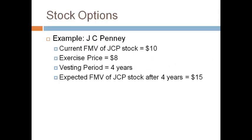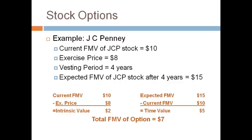This example for JCPenney illustrates how intrinsic value and time value is determined. The intrinsic value is determined by the difference in the current fair market value and the exercise price. The time value is the expected increase in the price of the stock over the vesting period. Take a moment to review the calculations.